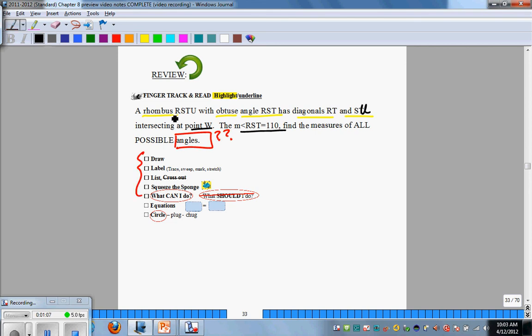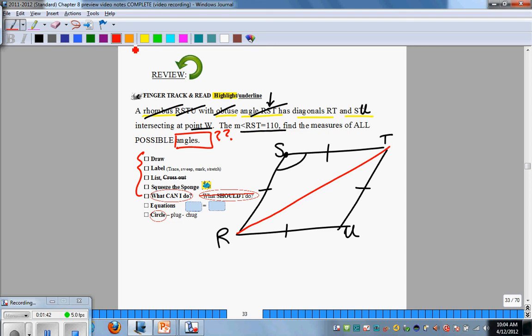We're going to draw a label list and squeeze a sponge. First, it's a rhombus - a parallelogram with all equal sides. The obtuse angle RST, so S must be at the obtuse angle. I'm going to put S right there where it's obtuse. We have R, S, T, and U.